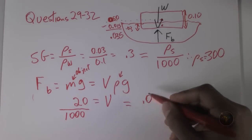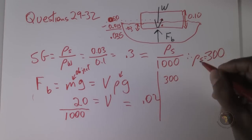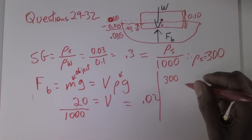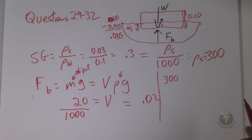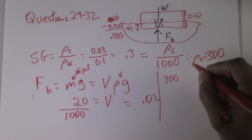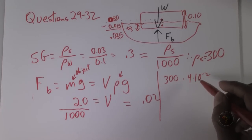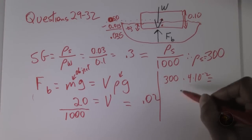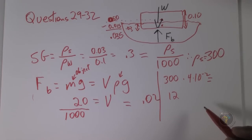The volume of the log is 0.1 × 0.2 × 2 meters — those are the given dimensions — which equals 4 × 10⁻² m³. With density 300 kg/m³ and volume 4 × 10⁻² m³, the mass of the log is 300 × 0.04 = 12 kilograms.